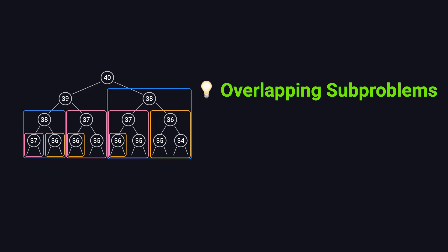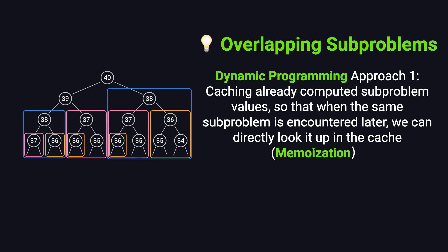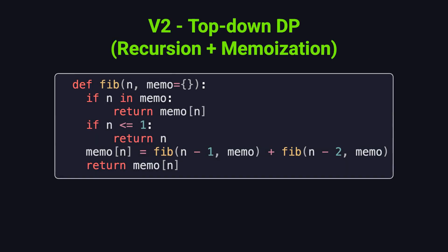So how do we fix that? This is where dynamic programming comes in. The core idea is simple. If you've already solved a subproblem once, just save the result. Then, the next time you need it, look it up instead of recalculating. This technique is called memoization. To use it, we just add a cache to our original recursive function. Let's take a look at how the updated code works.